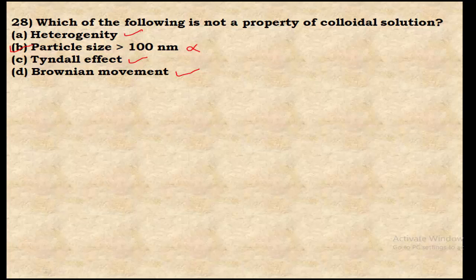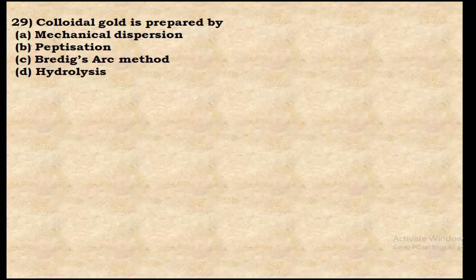Question 29: Colloidal gold (gold sol) is prepared by — most metal sols, including gold sol, platinum sol, and silver sol, are prepared by the Bredig's arc method, which is a physical method. Option C is correct.